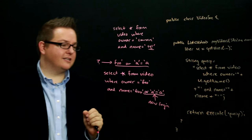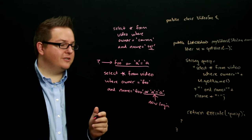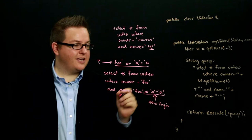And the reason is because the A equals A part is always true. And so what this means is when the database goes and interprets this, it's going to say, I want to find any video where owner equals Foo and name equals Foo.